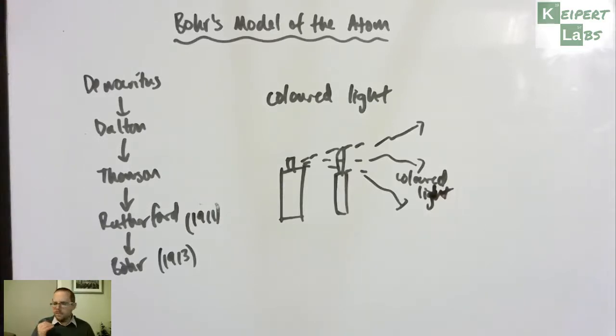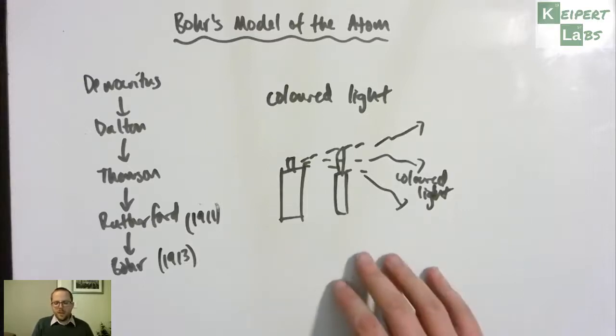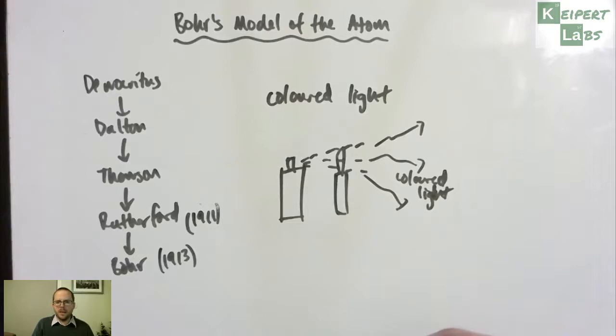Sodium will always give off the same type of light. Potassium will always give off the same type of light. And what Bohr encountered was, how could we possibly explain this phenomenon with Rutherford's model of the atom? Because there was no way to make sense of it all.